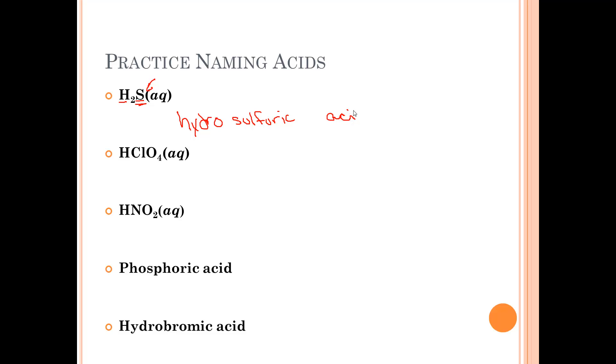Now we have a polyatomic ion here because we have more than two elements. A quick way to check that is if you have more than two capital letters. That is perchlorate. You have -ate here. -Ate becomes -ic, so it becomes perchloric acid.